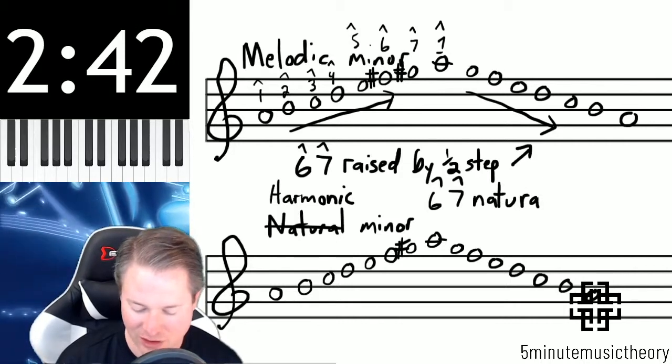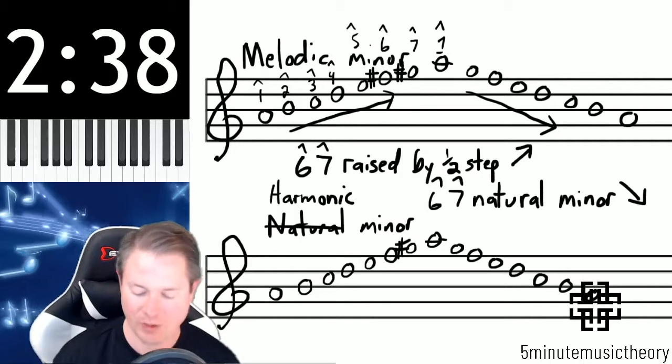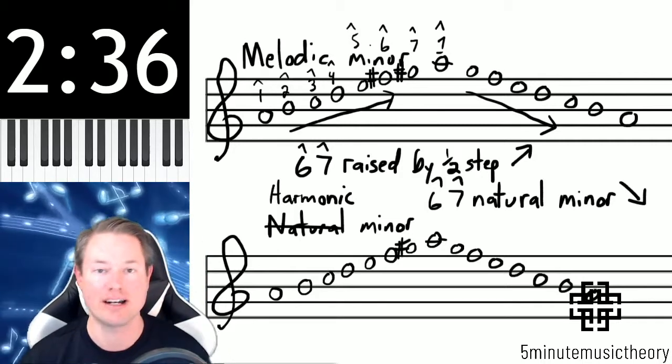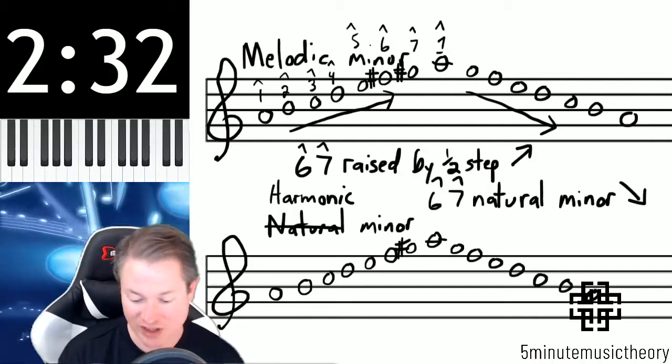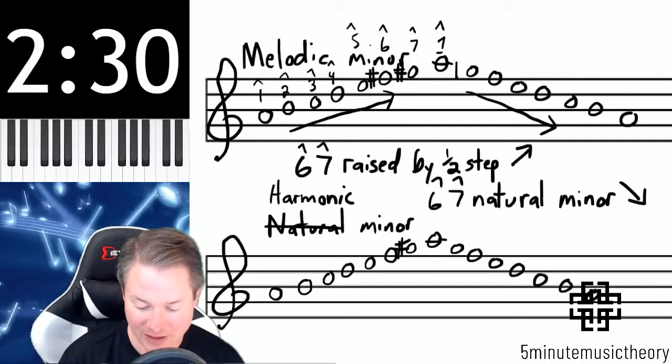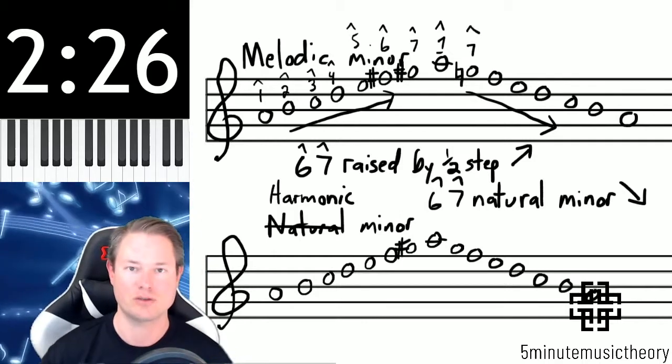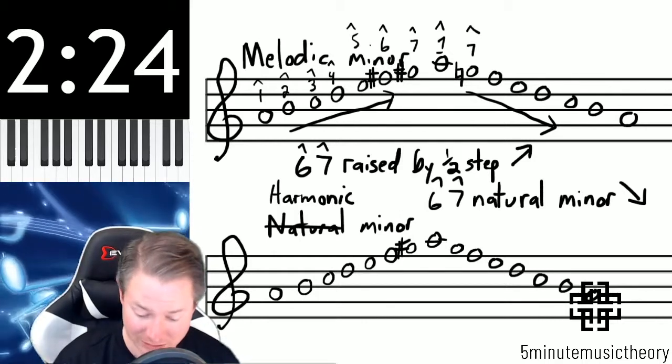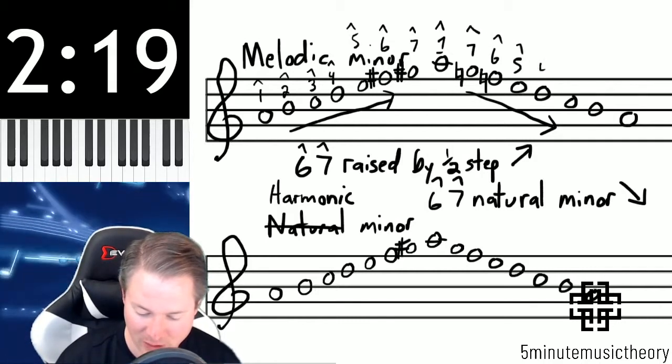Whatever they are in natural minor is the descending portion. Now because I wrote a G sharp earlier, I'm going to cancel that G sharp out by putting a natural, so on the way down it's a G natural and then it's an F natural as well. And then the rest of the scale is exactly the same.